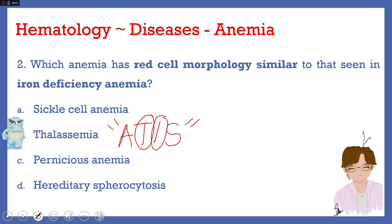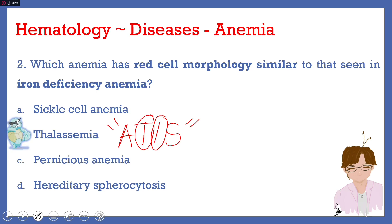So the answer is thalassemia — they have the same microcytic hypochromic morphology as iron deficiency anemia.